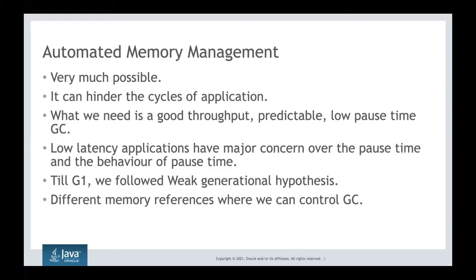When you say you are going to reduce pause time — that the application will not freeze — there is definitely going to be an impact on your throughput. You are trying to run the garbage collector thread and the application thread in parallel, which is concurrency. Some threads are given to the garbage collector, and some to the application, reducing application throughput slightly while the GC does its work. Demanding both good throughput and very low pause time simultaneously is too much.